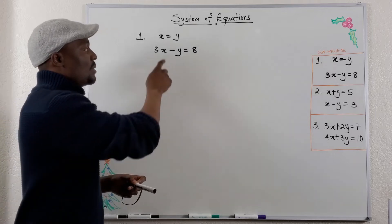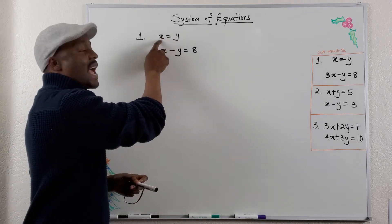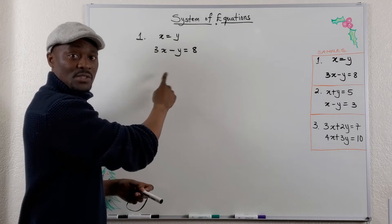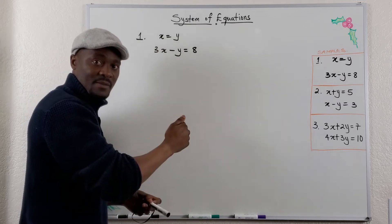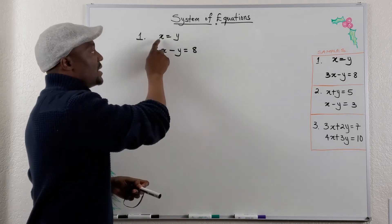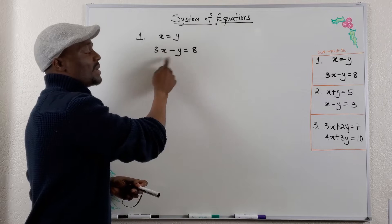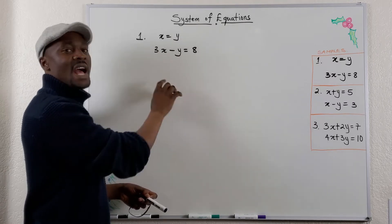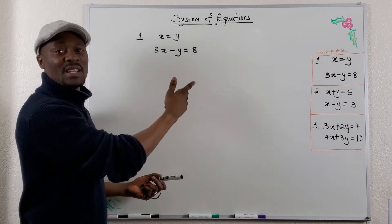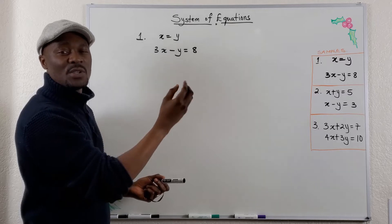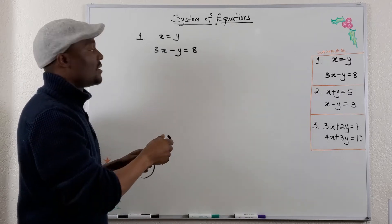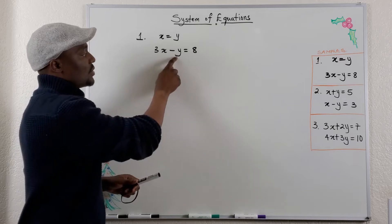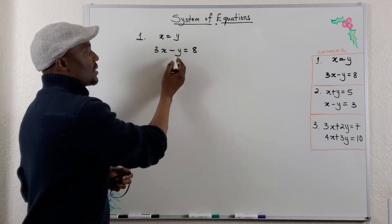If you replace y with x, it means the first variable you're going to solve for will be x. If you replace x with y, it means you're going to be getting y first. Because x already has a number multiplying it, why don't we just put x there instead of y. Since x and y are the same, I'm just going to plug in x.